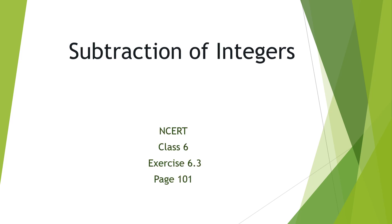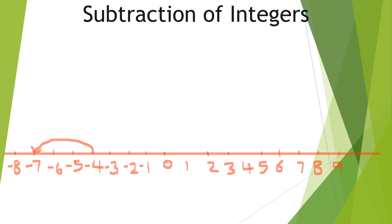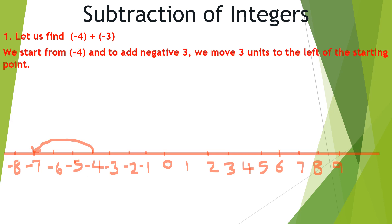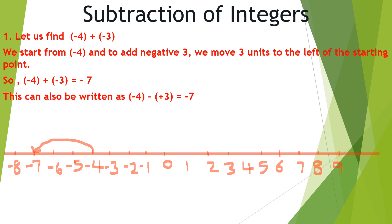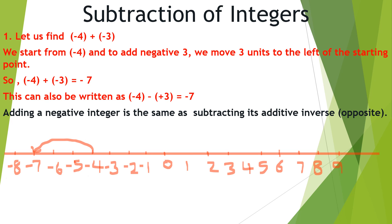Subtraction of integers in CRT class 6, exercise 6.3, page 101. Let us find minus 4 plus minus 3. Here we have two negative integers. When we add the two negative integers we get minus 7. Starting from minus 4, to add negative 3 we move three units to the left, so we reach minus 7. This can also be written as minus 4 minus plus 3 equals minus 7. Adding a negative integer is the same as subtracting its additive inverse, that is, the opposite.